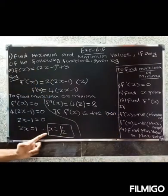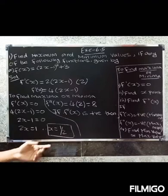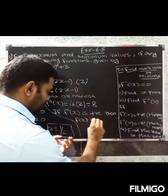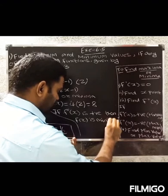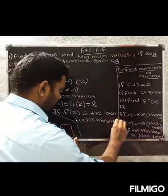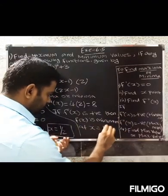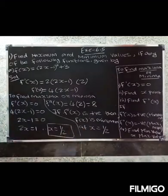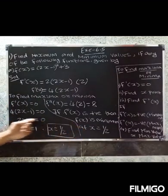Since f''(x) is positive, f(x) is minimum at x = 1/2. So the minimum occurs at x = 1/2.